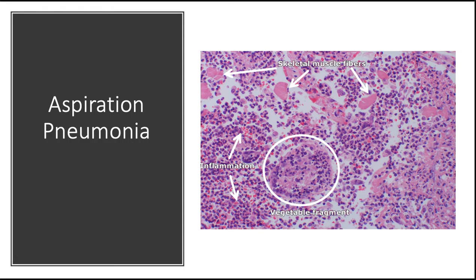Aspiration pneumonia occurs in debilitated patients or those who aspirate gastric contents while unconscious, for example after stroke or during repeated vomiting. Those affected have abnormal gag and swallowing reflexes that facilitate aspiration. The resulting pneumonia is partly chemical due to the extremely irritating effects of gastric acid and partially bacterial; typically more than one organism is recovered. Aspiration pneumonia is often necrotizing, pursues a fulminant clinical course, and is a frequent cause of death. In survivors, abscess formation is a common complication. Microaspiration occurs in many individuals with gastroesophageal reflux but does not lead to pneumonia.